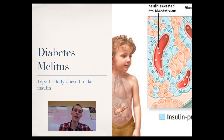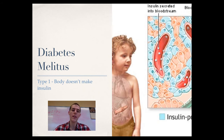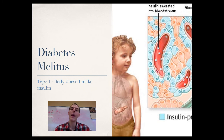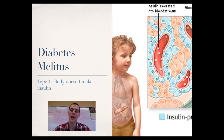Diabetes can be broken into two types. Type 1 is generally known as juvenile diabetes — it is more rare, only about 10% of cases. In type 1, the body doesn't make insulin because it is an autoimmune disease where the body kills off the insulin-producing cells in the pancreas. Because those cells are gone, insulin cannot be secreted in response to high blood sugar, so cells never get the signal to take in glucose. Type 1 is generally treated through an insulin regimen, and those diagnosed as children will have to take insulin throughout their lives.